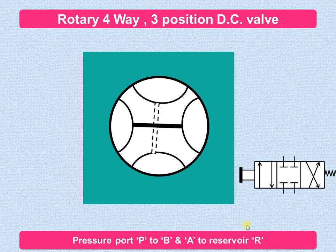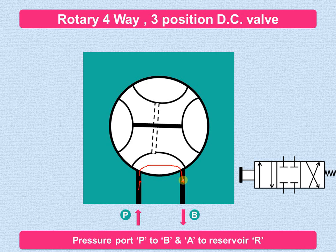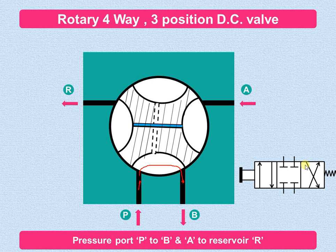When we further rotate the spool, the flow takes place from port P and it goes to port B. So the flow is taking place in this particular direction. Similarly, from A it can go to reservoir port R — from A the flow will come over here and go to port R. That is indicated in the right envelope mode — from P to B and from A to R. In this way the four-way, three-position direction control valve also works.